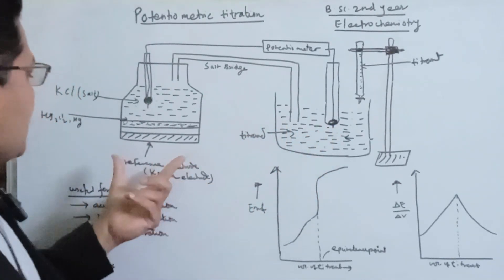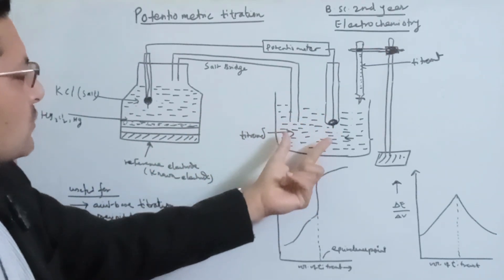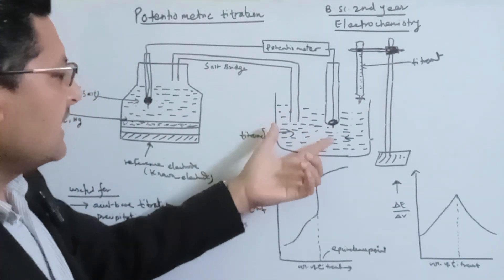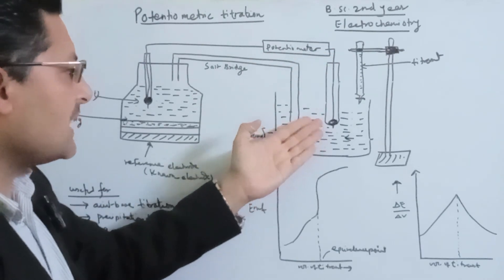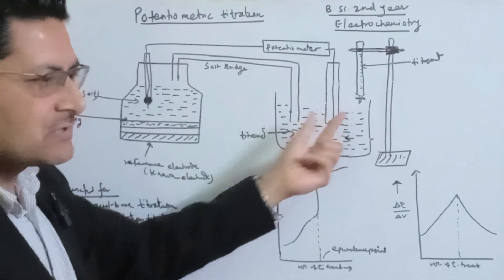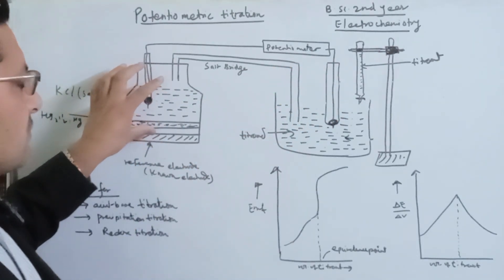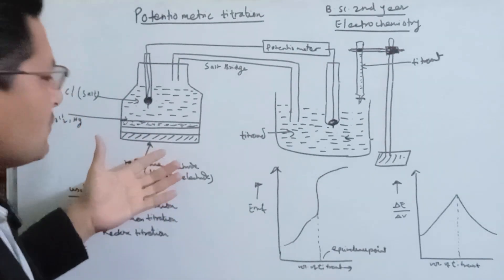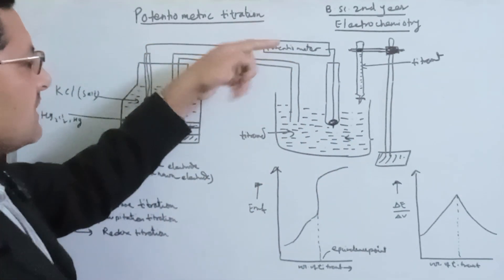If you put the indicator electrode in one side, then we put a reference electrode on the other side. The indicator electrode is an interesting component. If we get the solution for titration, we can measure the concentration. These two electrodes are connected via a salt bridge. This is the potentiometer setup, so we will measure the EMF of the cell.